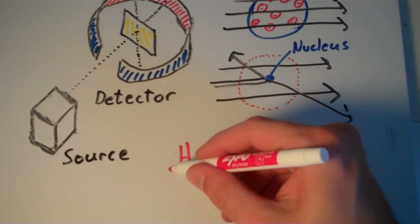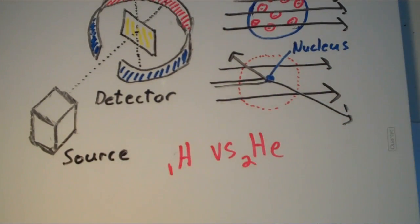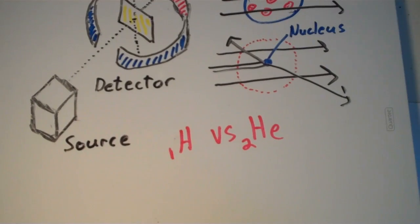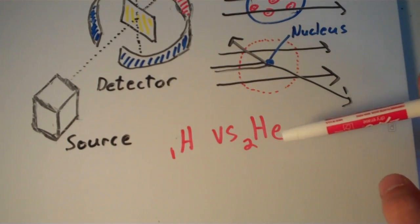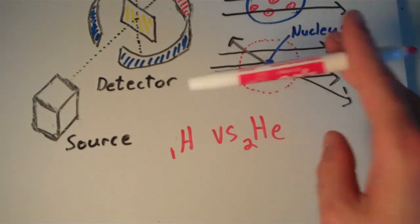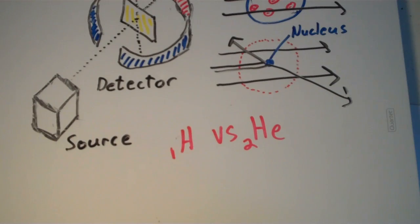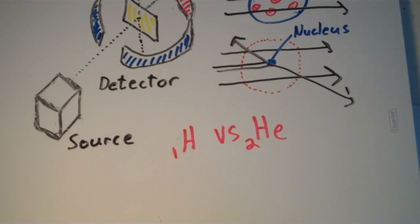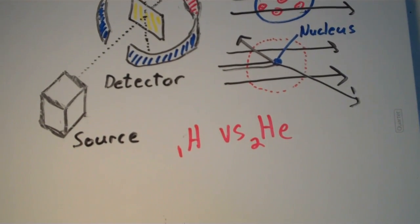Hydrogen, as we know, has one proton and helium, as we know, has two protons. Yet the mass of helium is about four times that of hydrogen. So there must be this extra mass within the nucleus that isn't positively charged. And that is where the neutron comes into play.